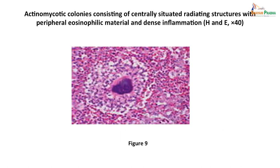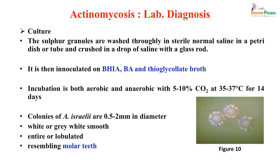Actinomycotic colonies present centrally as gram-positive organisms surrounded by peripheral eosinophilic material and dense inflammation around it. This eosinophilic material represents the sun rays or clubs formed due to the antigen-antibody reaction. For culture, the sulphur granules present in the pus are washed in sterile normal saline, crushed in a drop of saline, and inoculated onto brain heart infusion agar, blood agar, and thioglycolate broth. Incubation is both aerobic and anaerobic with 5 to 10 percent carbon dioxide at 35 to 37 degrees centigrade for 14 days.